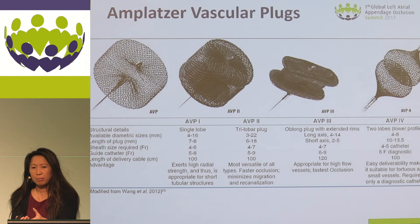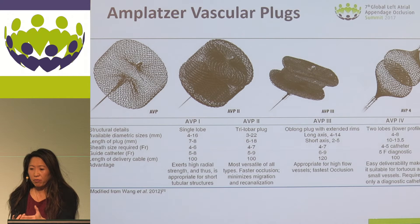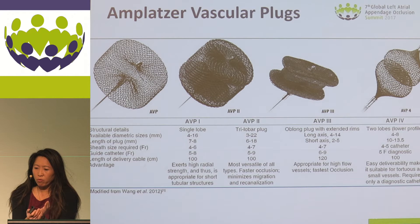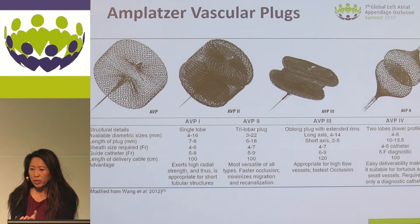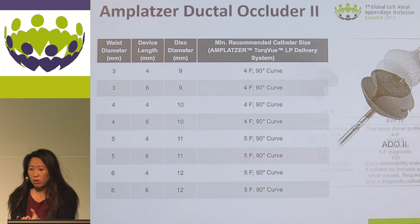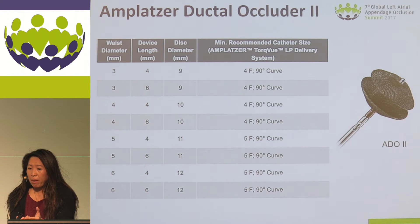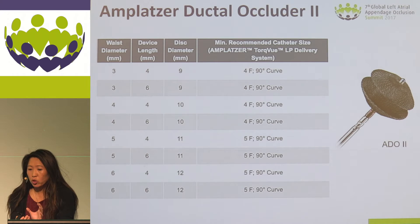These are the various vascular plugs available for this purpose. The AVP4 is nice because it's small caliber, but it covers leaks that are 4 to 8 millimeters only. The larger sizes with AVP2 can range up to 22 millimeters. The AVP3 is particularly nice because of its oblong shape, making it useful for eccentric types of peri-device leak. The Amplatzer ductal occluder has also been used in several examples — good for small holes between 3 to 6 millimeters in diameter and can be implanted through a 5 French catheter.